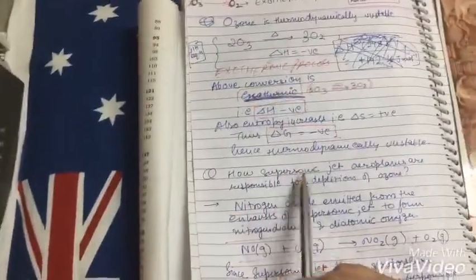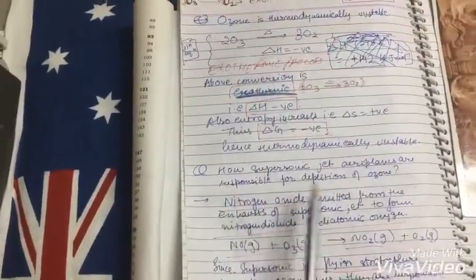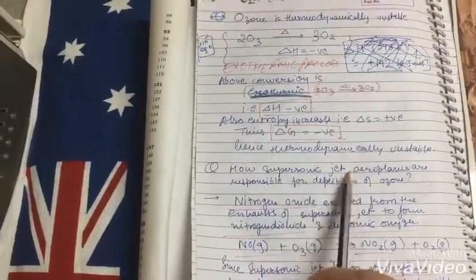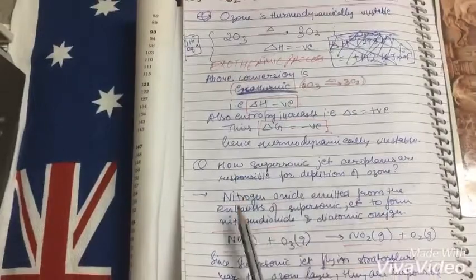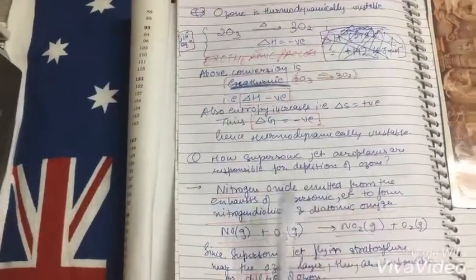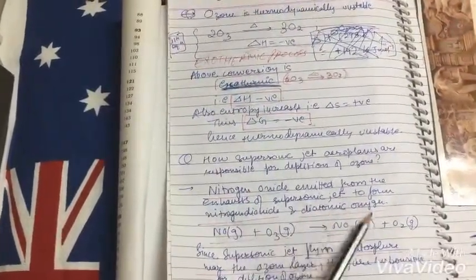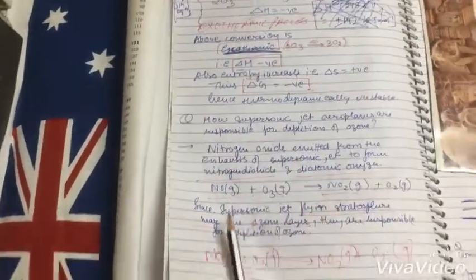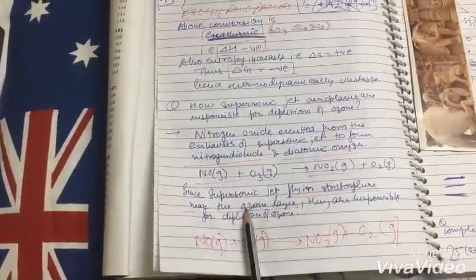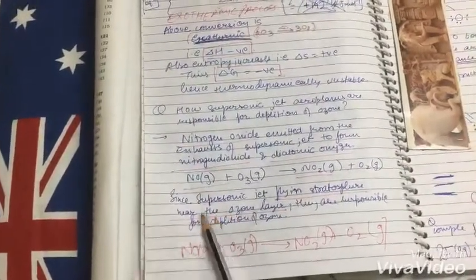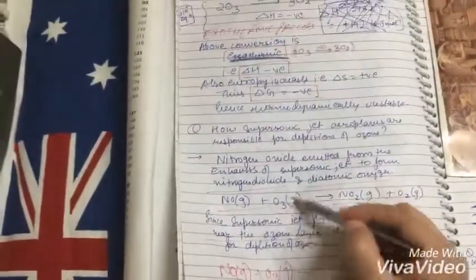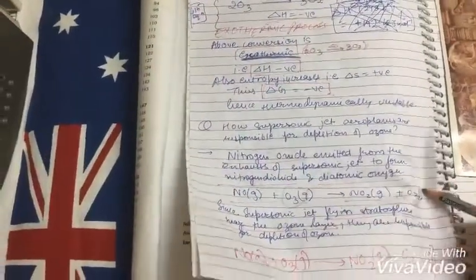How supersonic jet aeroplanes are responsible for depletion of ozone: nitrogen oxide emitted from the exhaust of supersonic jets forms nitrogen dioxide and diatomic oxygen. NO plus O3 gives NO2 plus O2. Since supersonic jets fly in stratosphere near the ozone layer, they are responsible for depletion of ozone because they convert the ozone into oxygen.